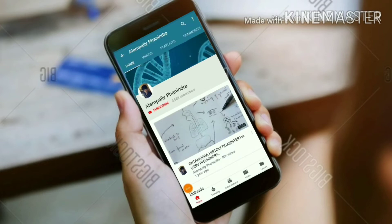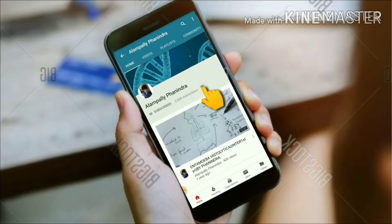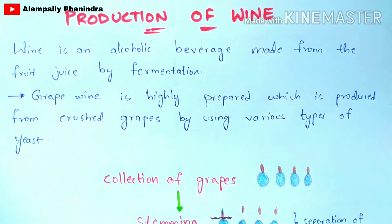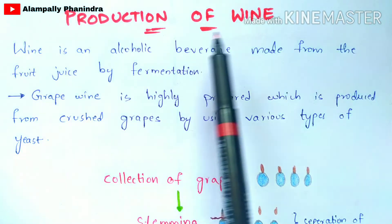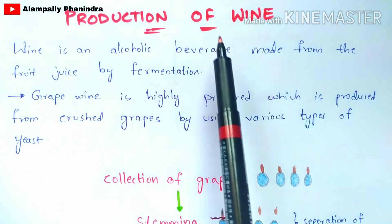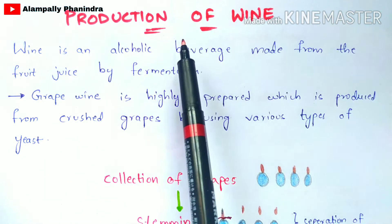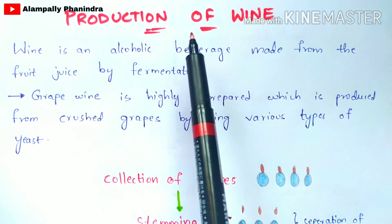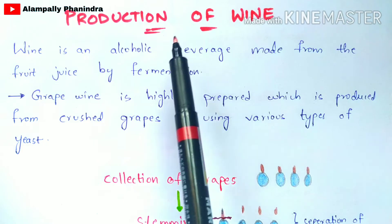Hi friends, if you like my videos subscribe to my channel and also press the bell icon for the latest updates. In this video, we are going to discuss one of the most important and interesting topics: the production of wine. The major technique used for the production of wine is fermentation.